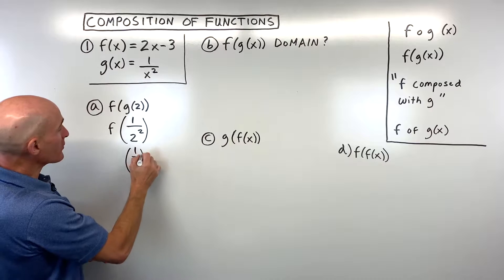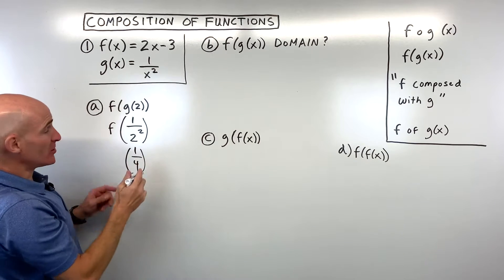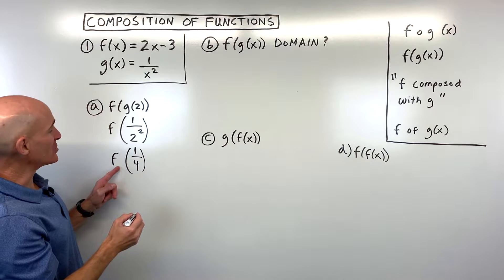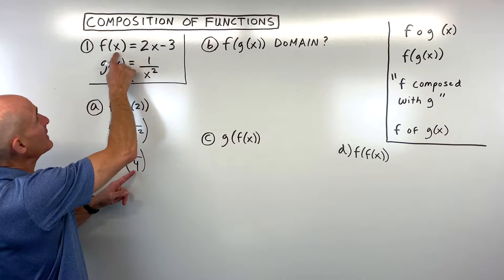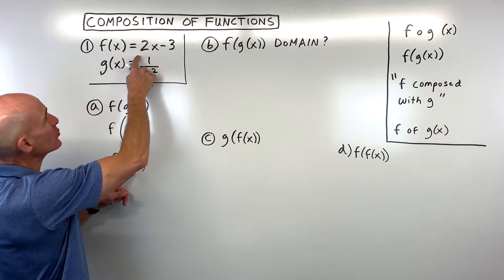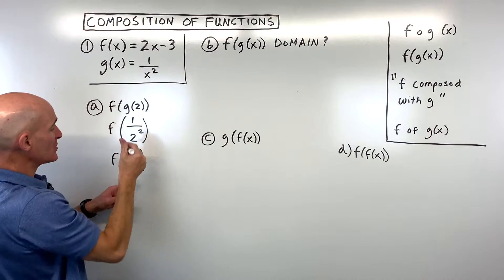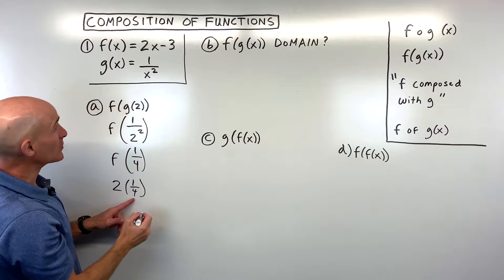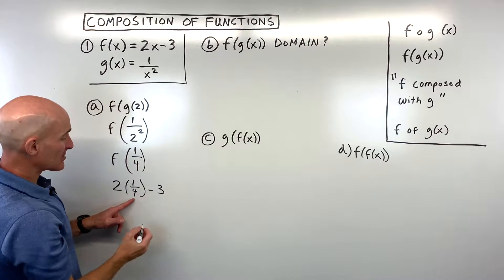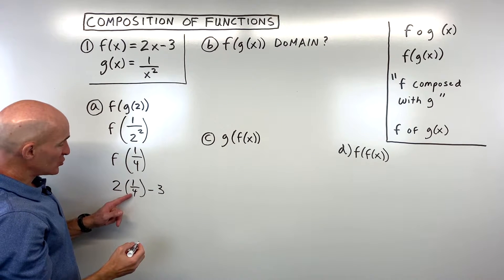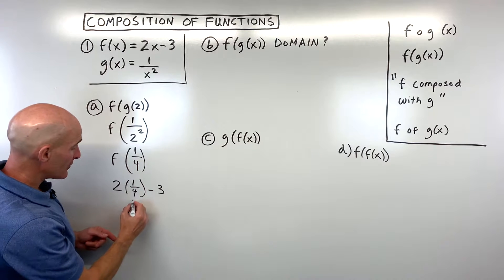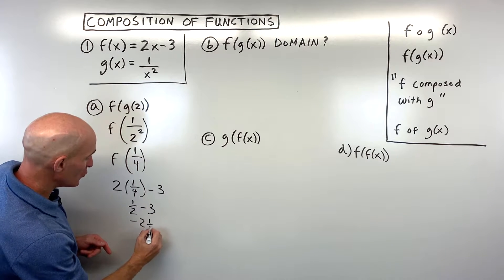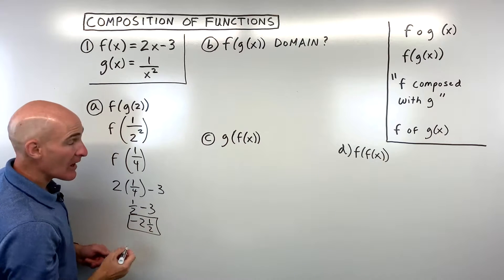1 over 2 squared comes out to 1 fourth. Now that 1 fourth, which is the output of the g function, becomes the input into our f function. So we put 1 fourth in for x: 2 times 1 fourth minus 3. That's 2 fourths, which is 1 half. So 1 half minus 3 is negative 2 and a half. That's your answer.